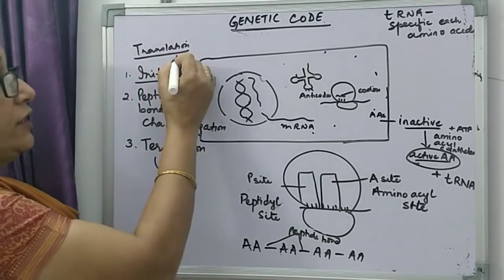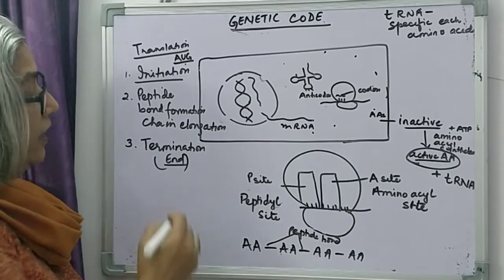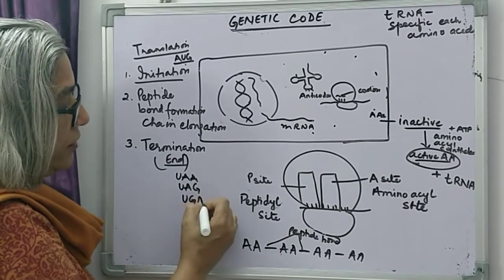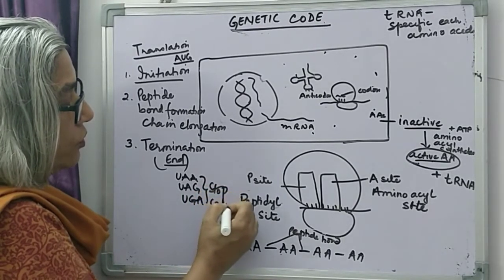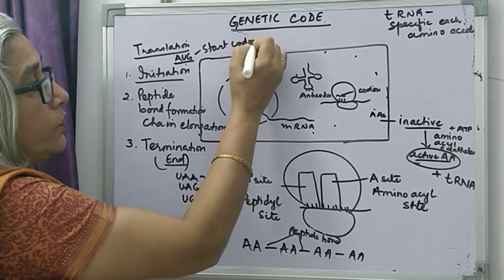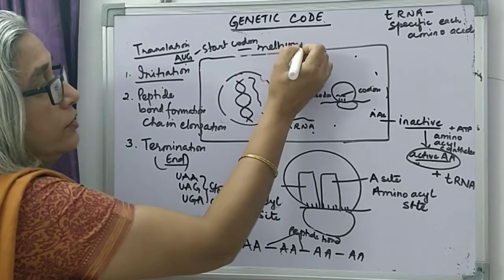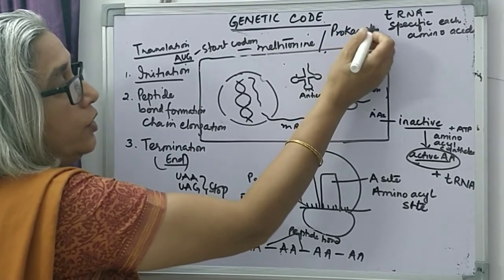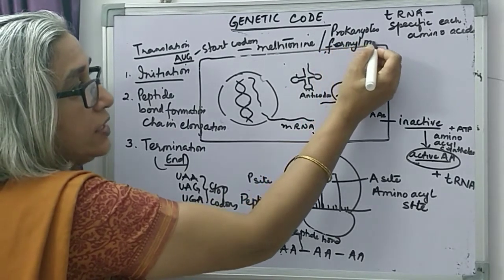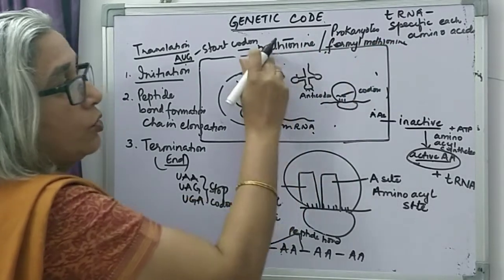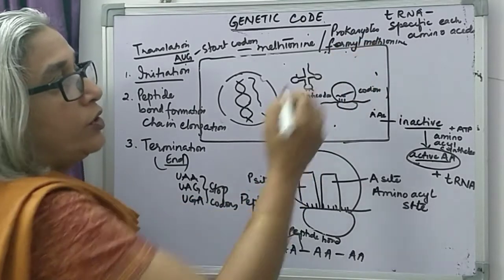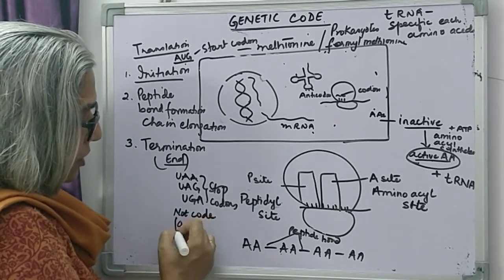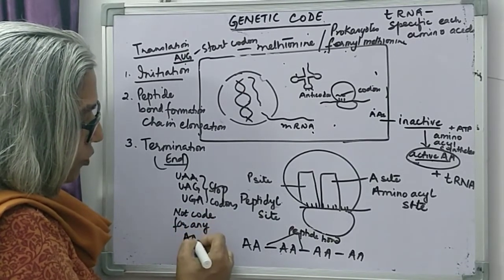Initiation is with the start codon AUG. For termination, there are three codons: UAA, UAG, and UGA — these are the stop codons. The start codon AUG codes for the amino acid methionine. In prokaryotes, it codes for formylmethionine. The stop codons do not code for any amino acid.